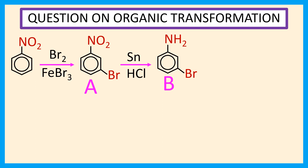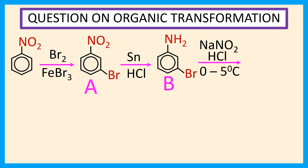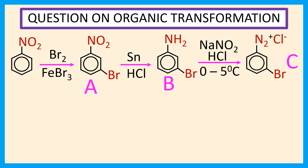Metabromoaniline reacts with NaNO2 in the presence of HCl at 0 to 5 degrees centigrade to give metabromobenzenediazonium chloride. So, compound C is metabromobenzenediazonium chloride.